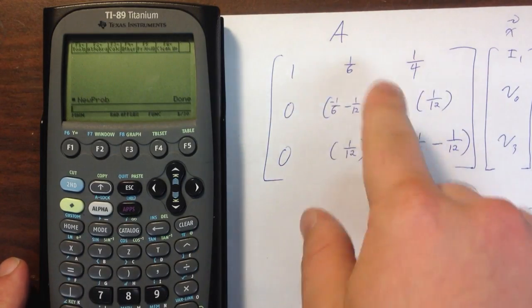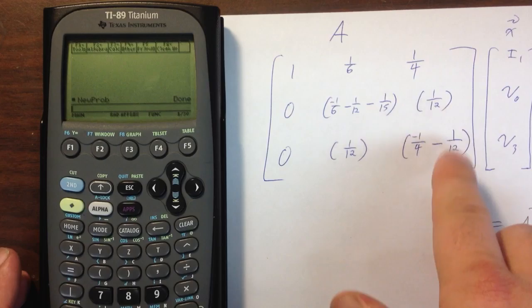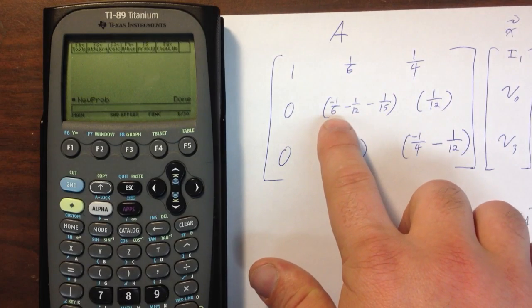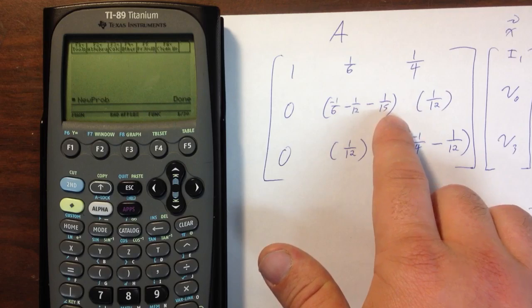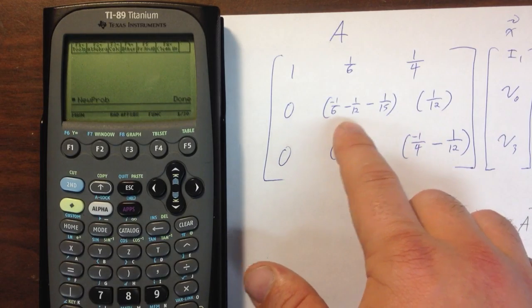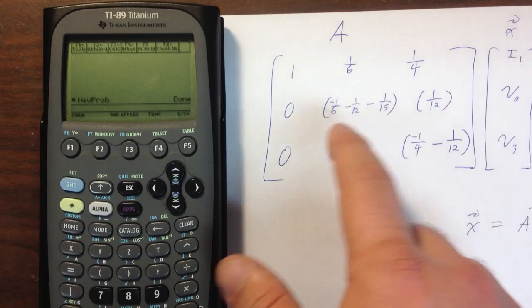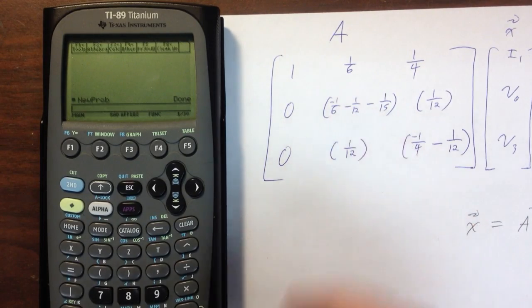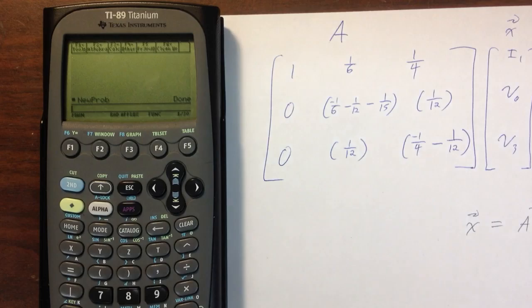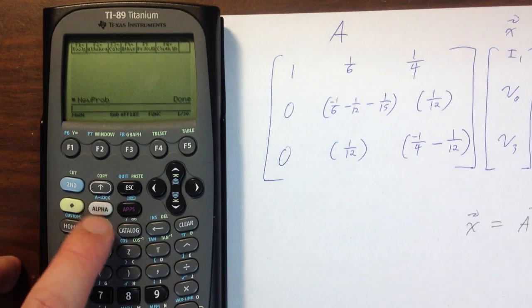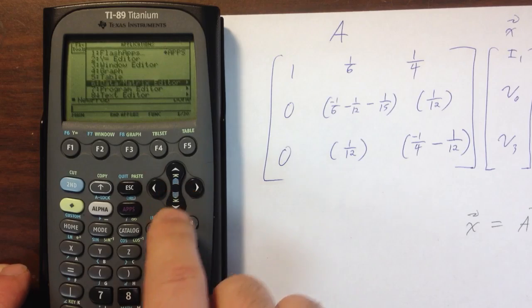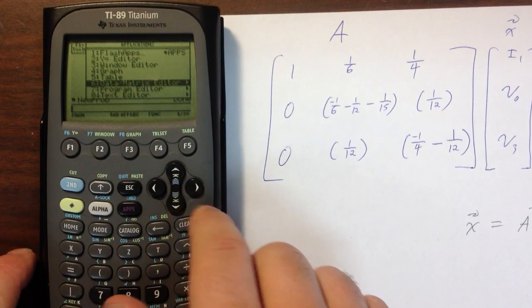Now let's jump straight into putting in this A matrix into our calculator. I've got my A matrix right here, and notice I didn't simplify it at all. I want the calculator to do the maximum amount of work possible. I didn't simplify minus 1 over 6, minus 1 over 12, minus 1 over 15. If I try to simplify 50 of those on an exam I might make a mistake, whereas the calculator isn't going to make a mistake so long as I get that in correctly.